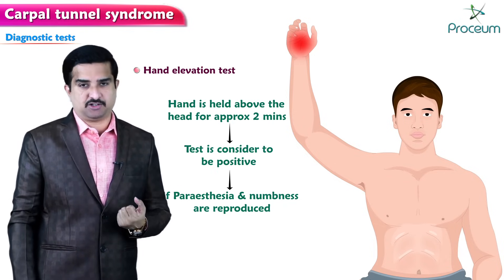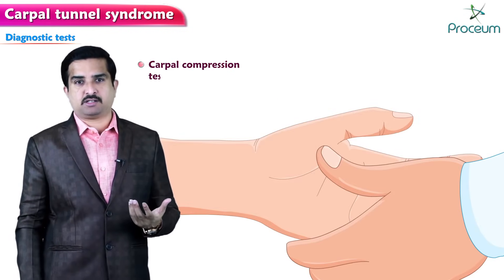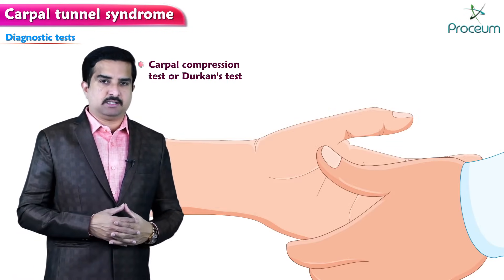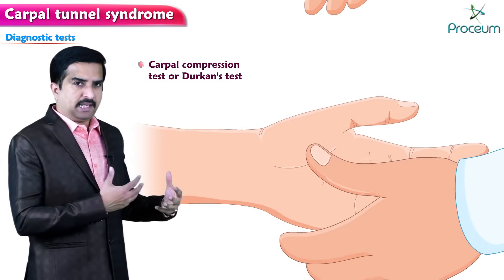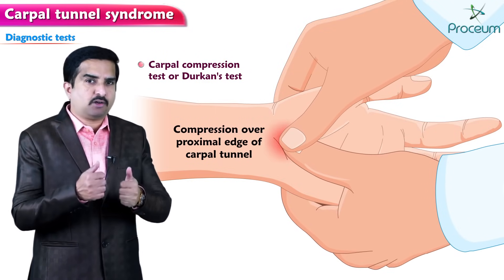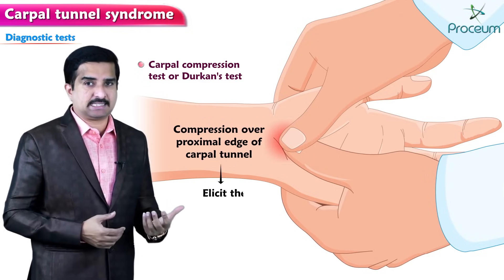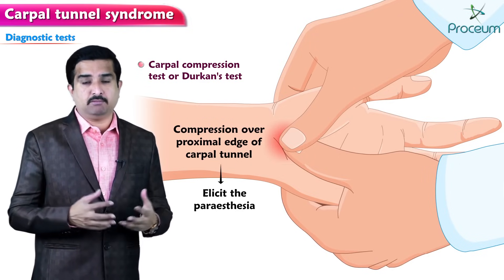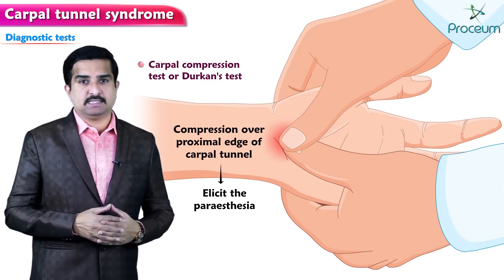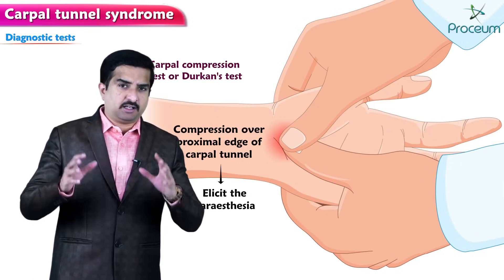The carpal compression test, also known as Durkan's test, involves applying moderate compression with the fingers directly over the proximal edge of the carpal tunnel. The examiner may elicit paresthesia in the distribution of the median nerve if the test is positive.